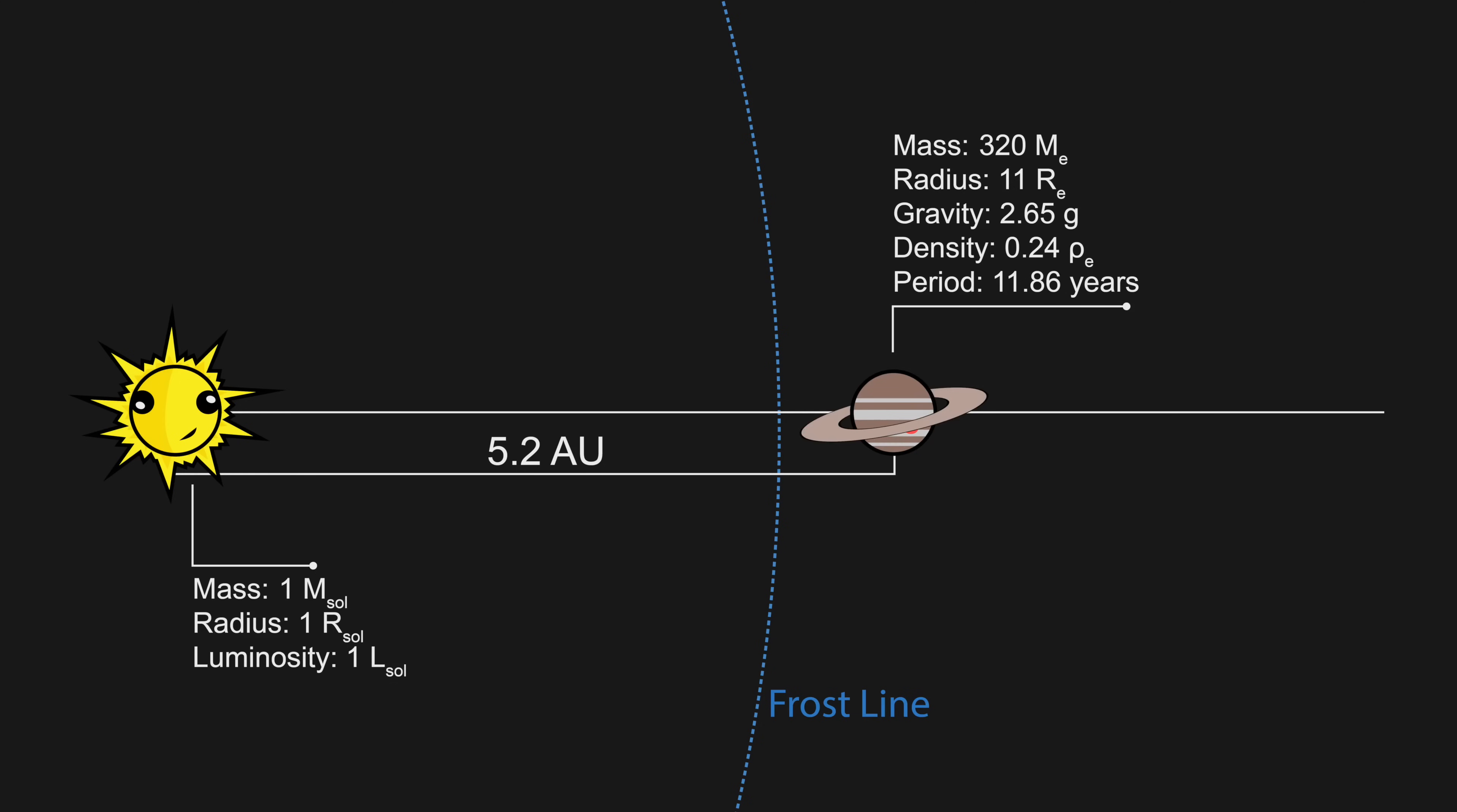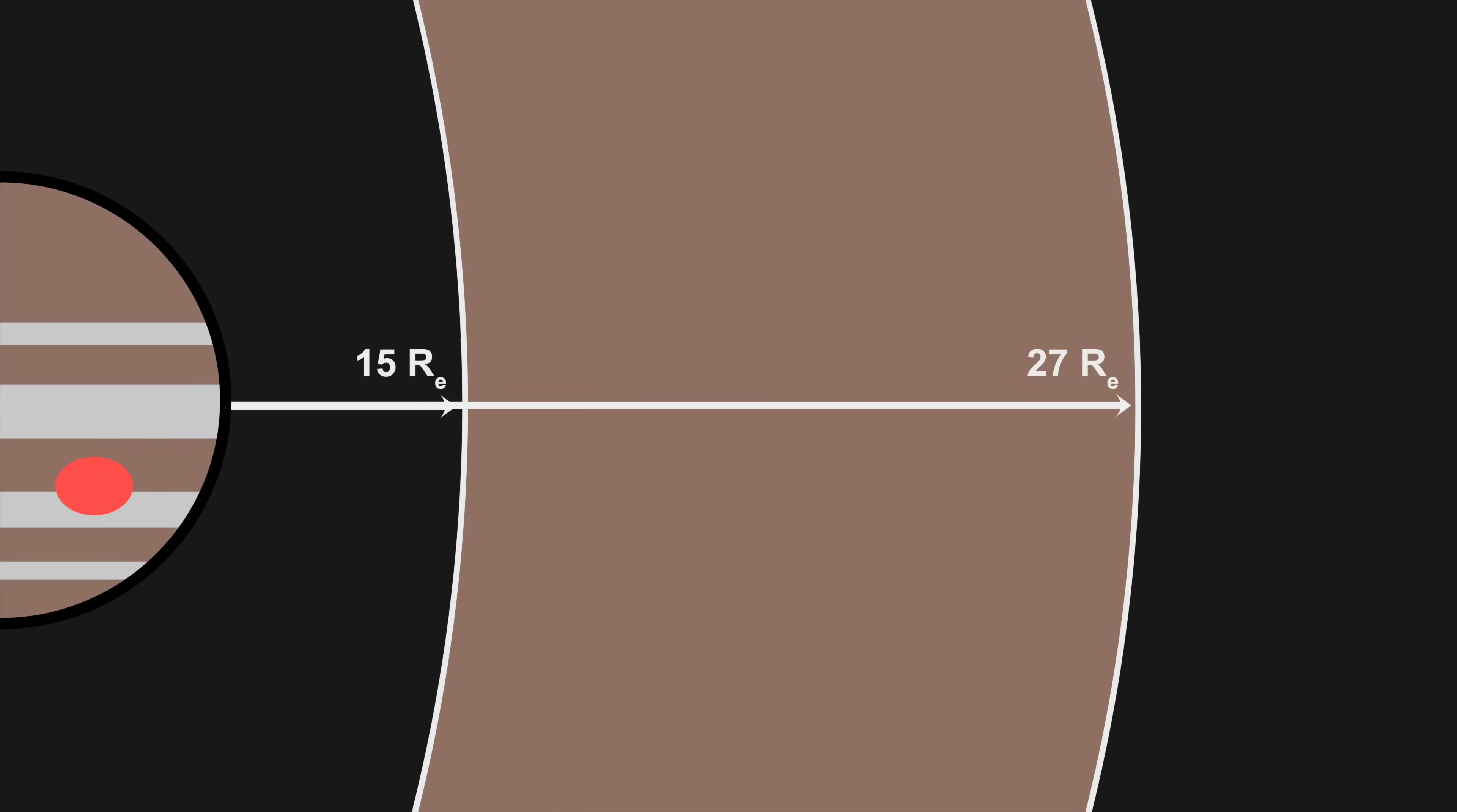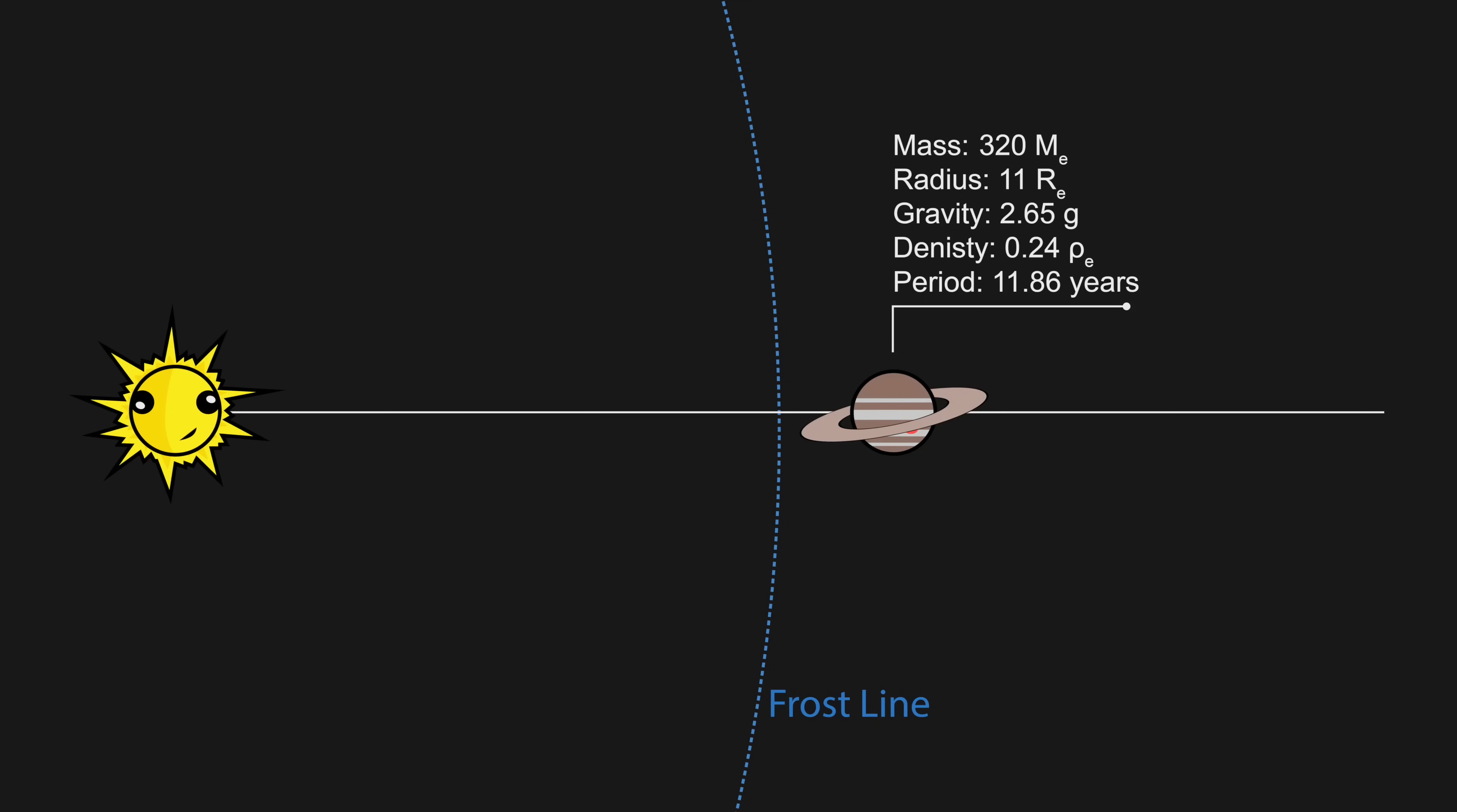Gas giant rings should be placed between about 1.34 and 2.44 planetary radii from the center of the giant planet. Plus or minus 0.2 in either direction, if you want. My rings extend from 15 to 27 Earth radii out. Note that in my case, one planetary radius equals 11 Earth radii.